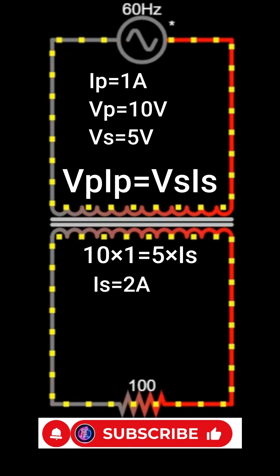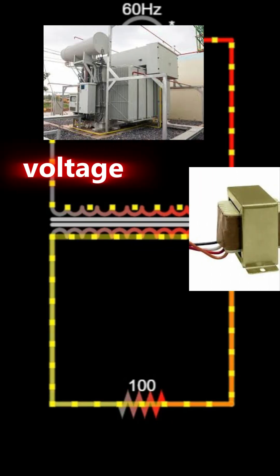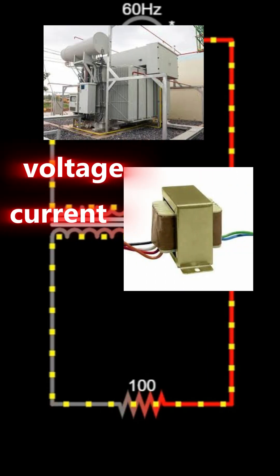So Is equals 2 amperes. This example shows how a transformer can reduce voltage but increase current while keeping power balanced.